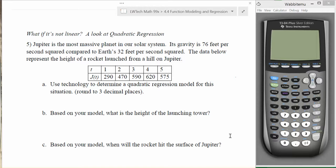Consider the following situation. Jupiter is the most massive planet in our solar system. Its gravity is 76 feet per second squared compared to Earth's 32 feet per second squared. The data below represents the height of a rocket launched from a hill on Jupiter. T is going to represent the time that the rocket has traveled in seconds, and J is going to represent the height of this rocket on Jupiter in feet.